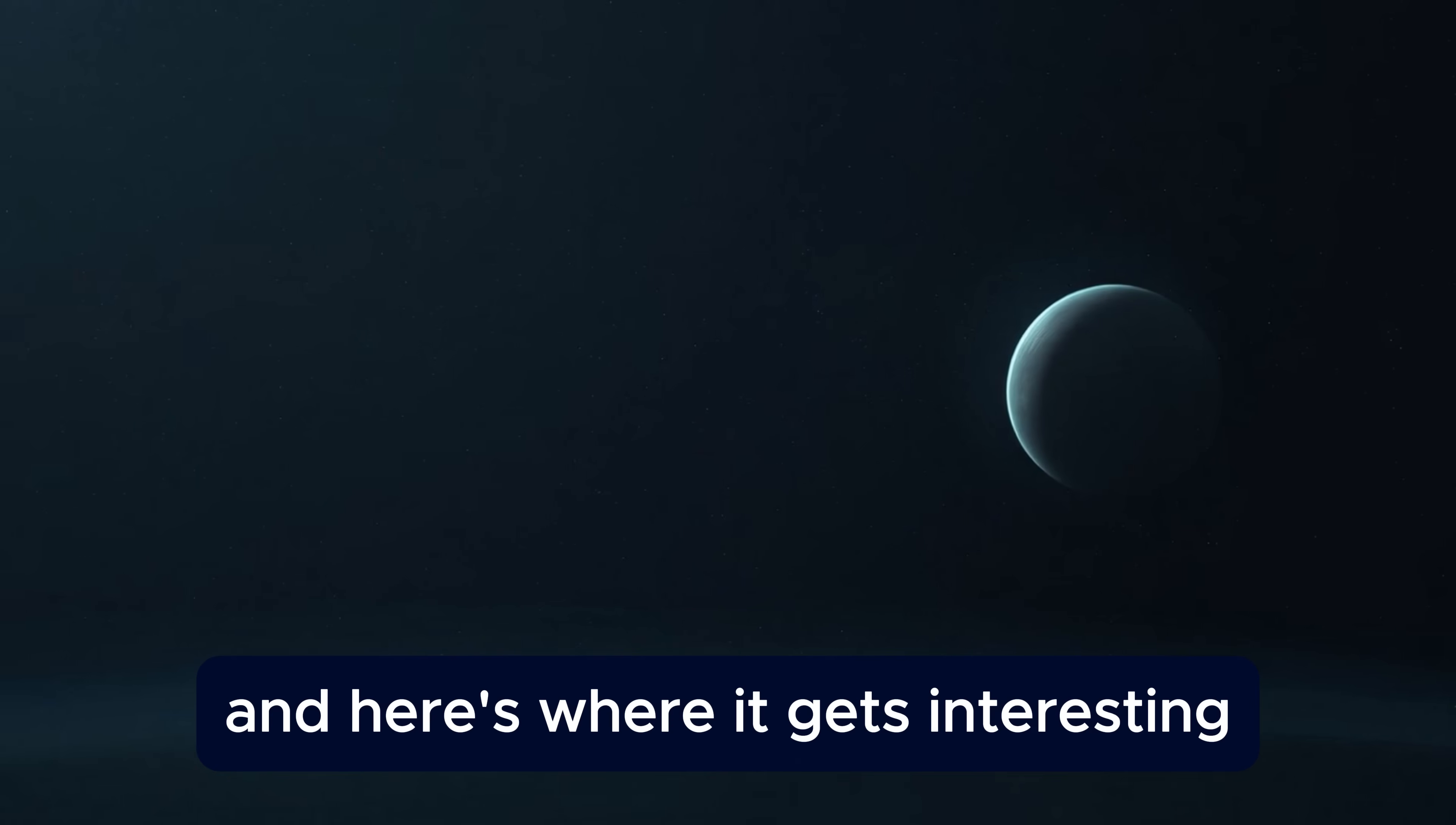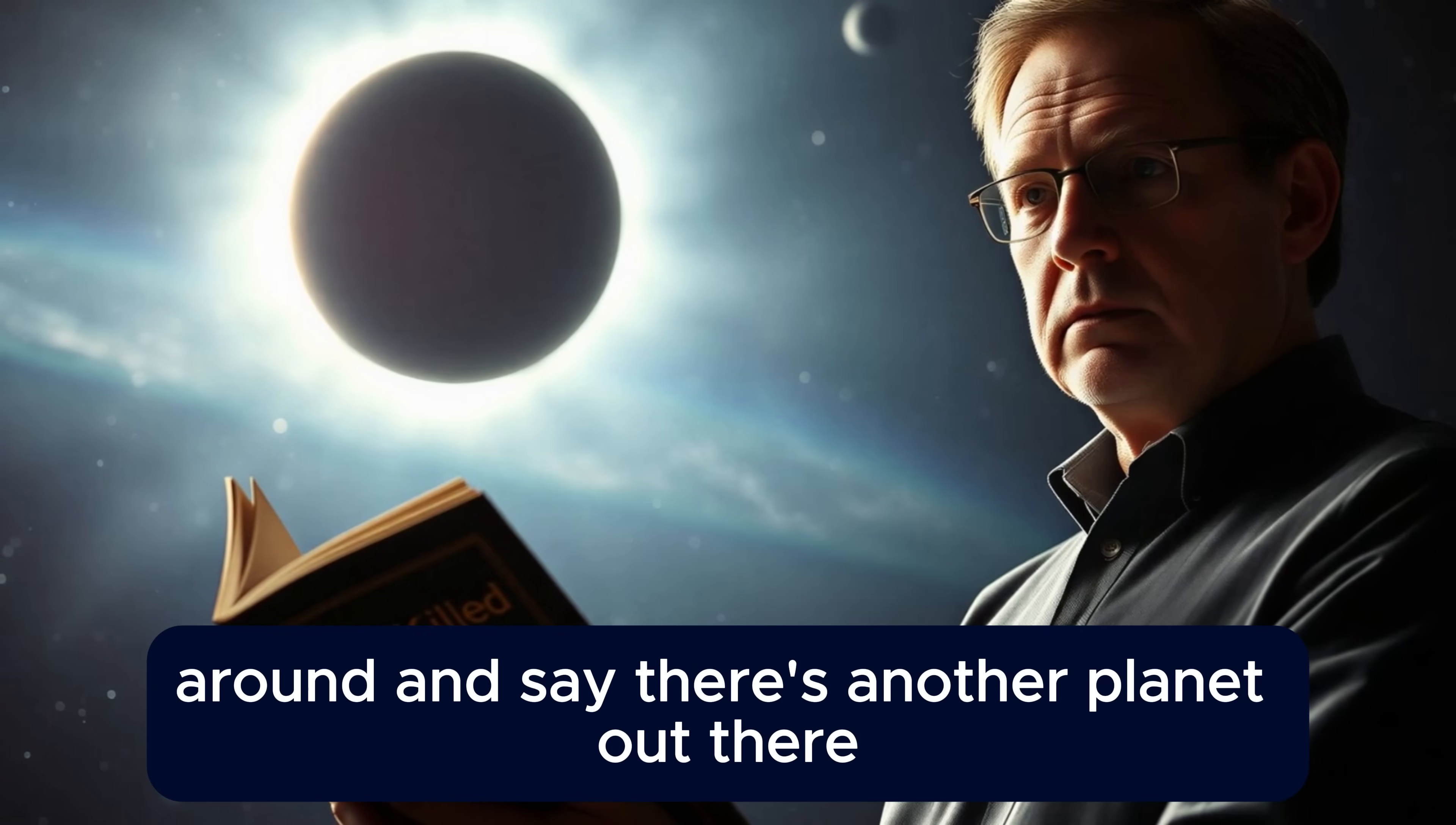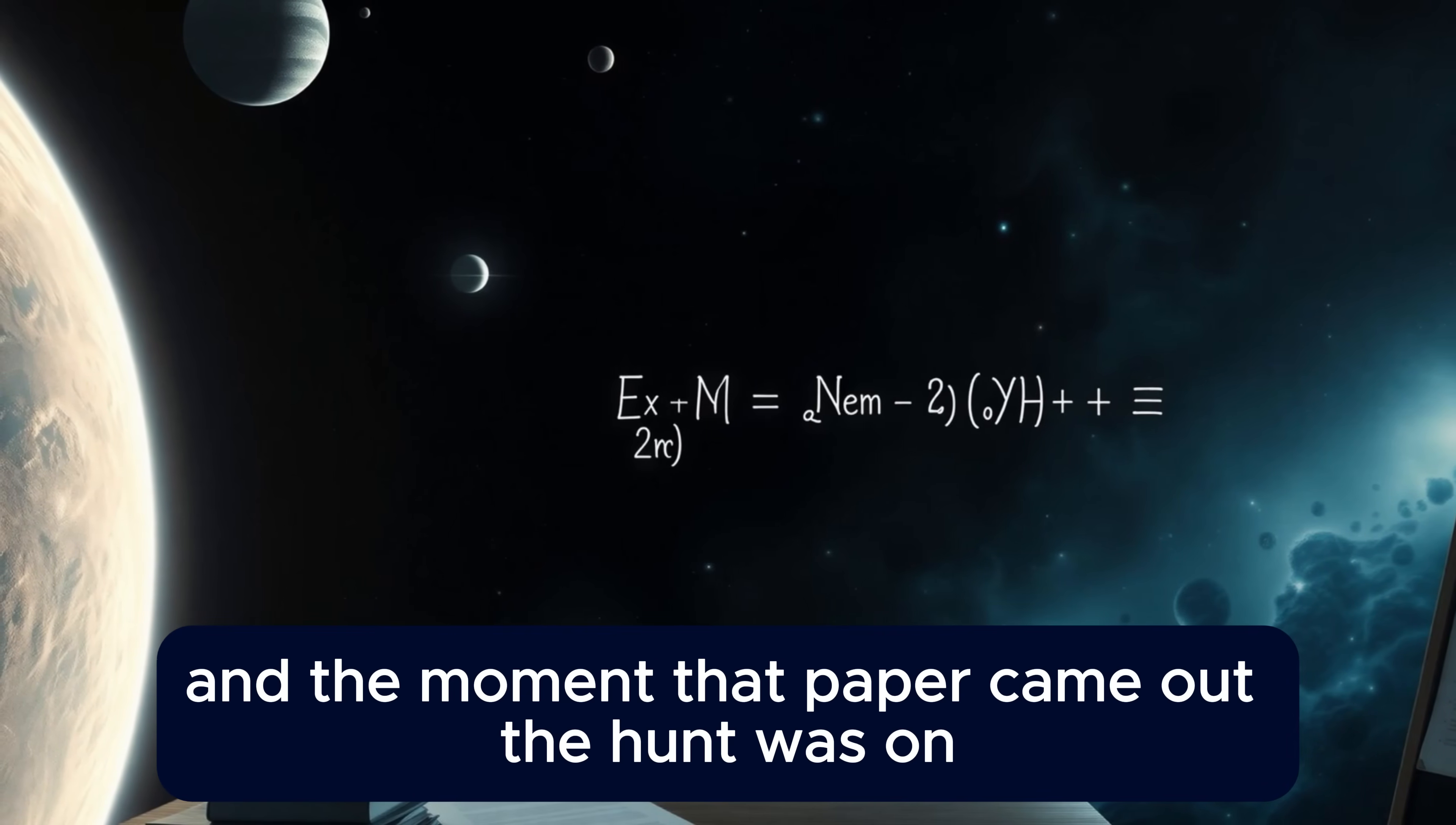Mike Brown is the same guy who got Pluto kicked out of the planet club. The man literally wrote a book called How I Killed Pluto and Why It Had It Coming. So for him to turn around and say there's another planet out there, a real one this time, that meant something. This wasn't a headline grab. This was serious science backed by serious math. And the moment the paper came out, the hunt was on.